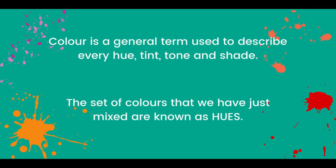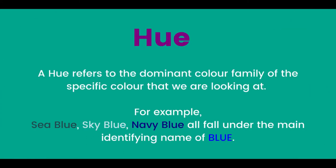The set of colours that we've just mixed are known as hues. A hue refers to the dominant colour family of the specific colour that we're looking at. For example, sea blue, sky blue, navy blue all fall under the main identifying name of blue.